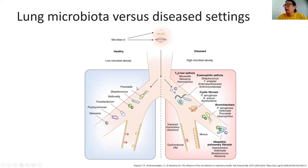Common taxa or species are located in the lung to sustain the homeostasis of our lung. But for certain diseases, the composition or consistency of the microbiome will change a lot. Here are some diseases and their related harmful microbiomes.